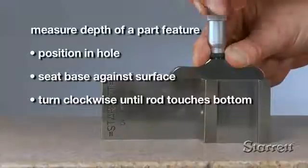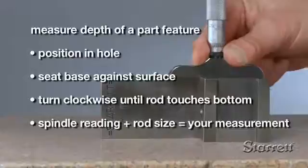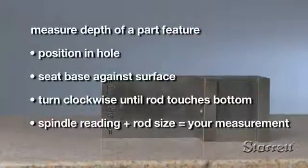Next, turn the spindle slowly in a clockwise direction. When the tip of the rod touches the bottom of the hole, immediately stop turning. Then carefully remove the tool from the hole.